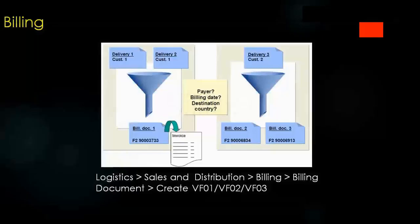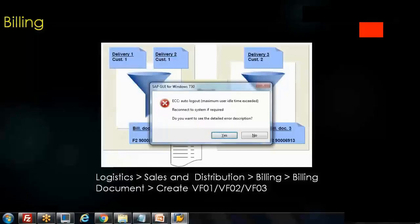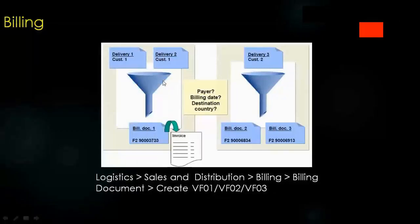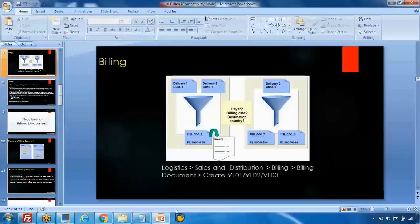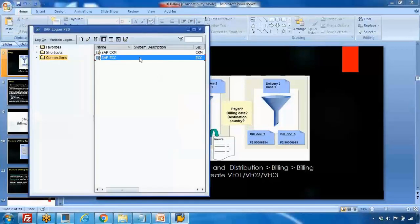Earlier we created some delivery documents and posted goods issue from those deliveries. Now today we're going to create the billing document. The menu path is Logistics > Sales and Distribution > Billing > Billing Document, or you can directly use transaction VF01.